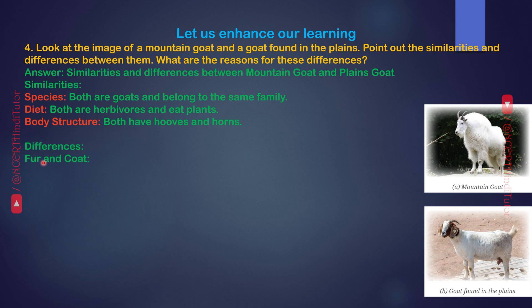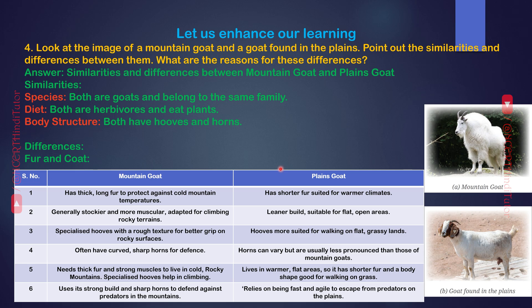Differences. Fur and Coat: Mountain goat has thick, long fur to protect against cold mountain temperatures. Plain goat has shorter fur suited for warmer climates. Body build: Mountain goat is generally stockier and more muscular, adapted for climbing rocky terrains. Plain goat has a leaner build, suitable for flat, open areas. Hooves: Mountain goat has specialized hooves with a rough texture for better grip on rocky surfaces. Plain goat has hooves more suited for walking on flat, grassy lands.